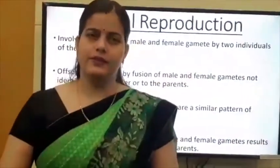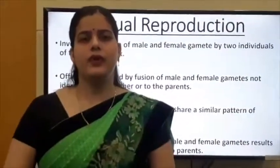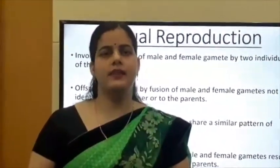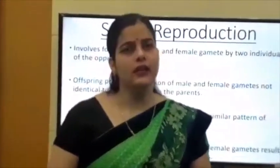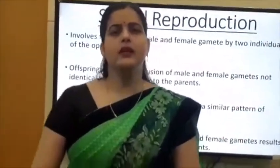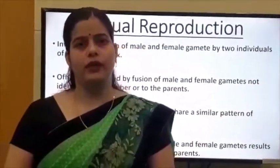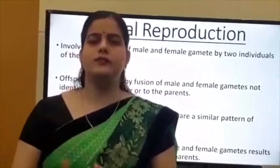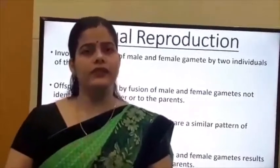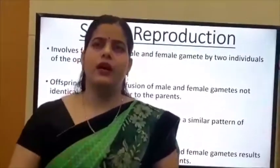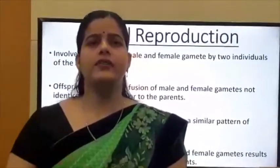In my previous lecture I discussed lifespan — the period from birth to natural death. After that we discussed asexual reproduction and its types. Asexual reproduction involves a single parent to form offspring. Types include fission (splitting), budding (offspring from a small projection on the parent body), fragmentation (offspring from a fragment of the parent), and regeneration.